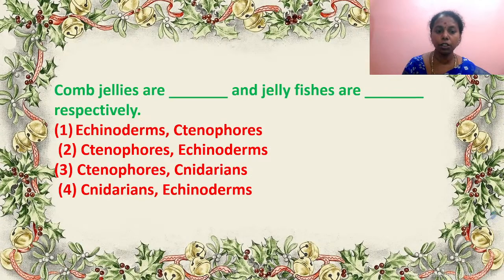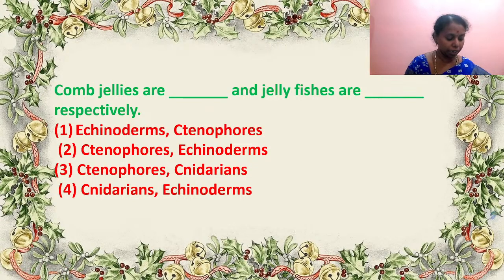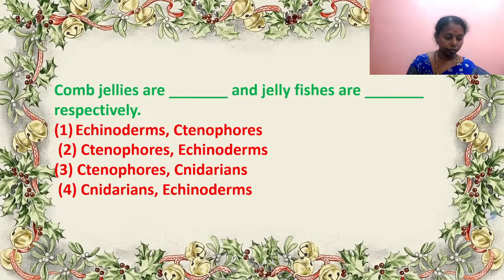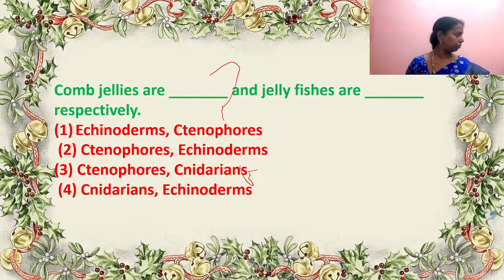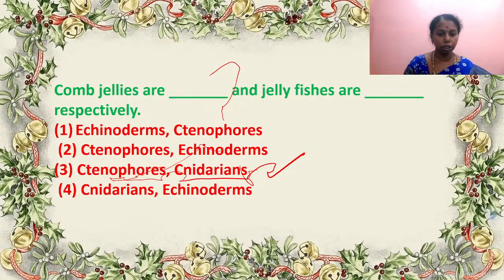Comb jellies are dashed and jellyfishes are dashed respectively — belonging to which phylum? Comb jellies belong to what? And jellyfishes are dashed. Comb jellies are ctenophores and jellyfishes are cnidarians. Jellyfishes are not echinoderms; they are cnidarians, belonging to Coelenterata. That is option C.